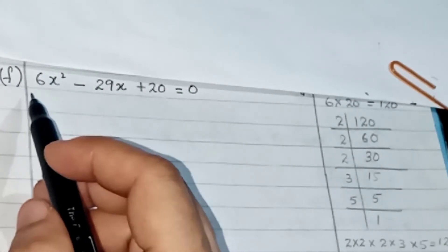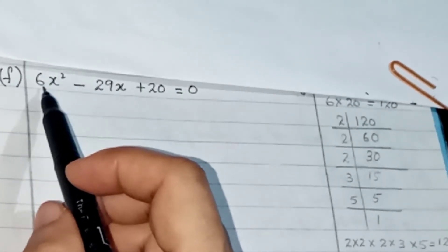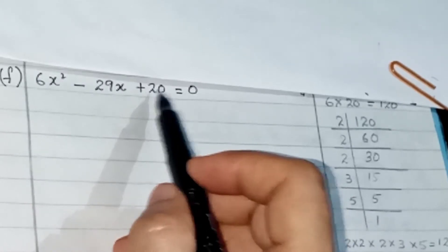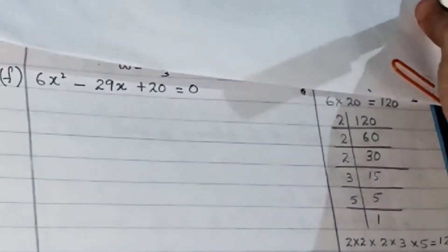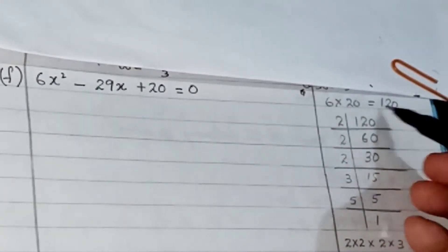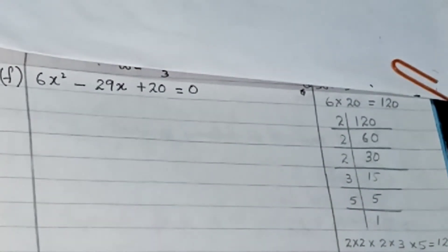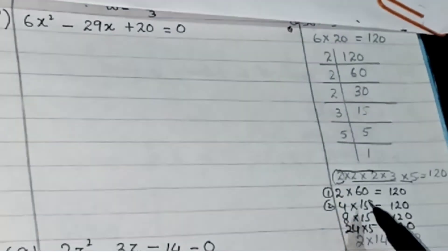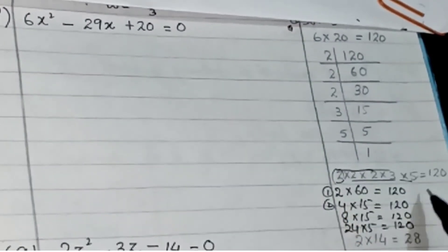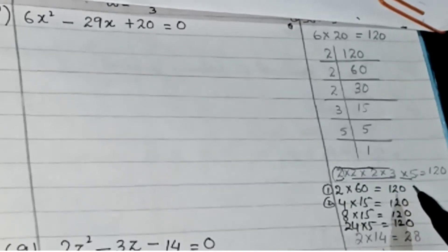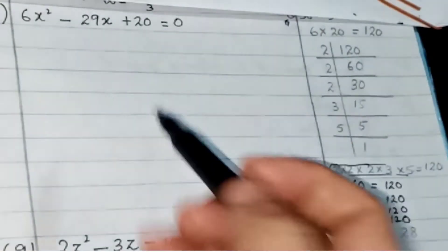Moving to part F of question number 5. Here we have 6 as the coefficient of the first term and 20 as the last term. Multiplying 6 by 20 gives 120. When we factorize 120 we get these factor pairs, and we need to choose the pair that adds up to the middle term coefficient of 29.